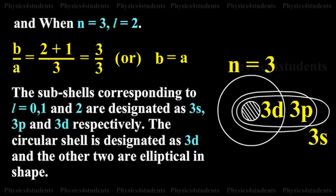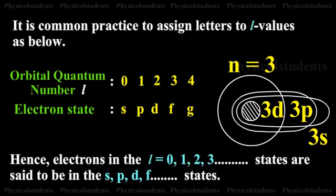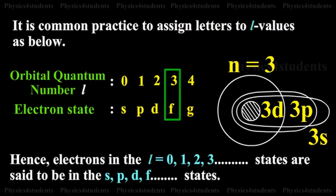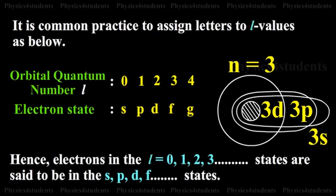To summarize the l value representations: l = 0 represents s, l = 1 represents p, l = 2 represents d, and l = 3 represents f. Currently, we only have l values from 0 to 3. In the future, if l reaches 4, that subshell would be designated as g.